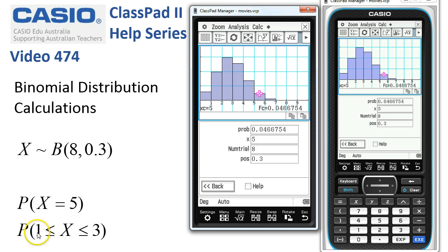If we calculate the probability of getting 1 to 3 values inclusive, then we'd be looking at these three. So the probability is going to be much larger than 0.046.